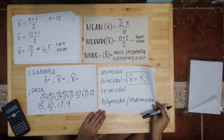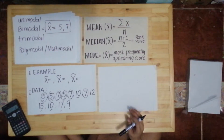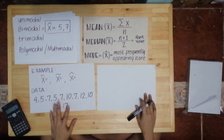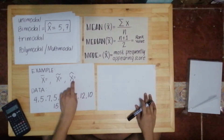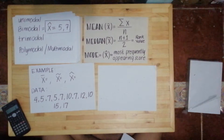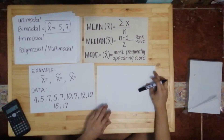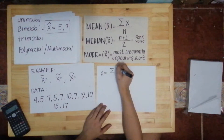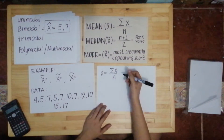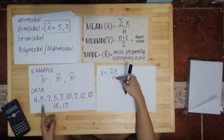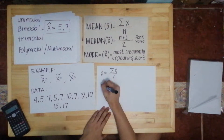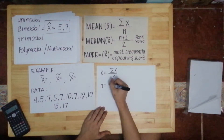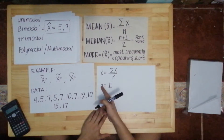For another example, let's find the mean, median, and mode again. The data are: 4, 5, 7, 5, 7, 10, 7, 12, 10, 15, 17. Counting the scores: 1 through 11, so n equals 11.